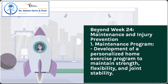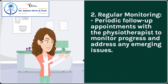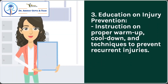Beyond Week 24 – Maintenance and Injury Prevention: 1. Maintenance program – development of a personalized home exercise program to maintain strength, flexibility, and joint stability. 2. Regular monitoring – periodic follow-up appointments with the physiotherapist to monitor progress and address any emerging issues. 3. Education on injury prevention – instruction on proper warm-up, cool-down, and techniques to prevent recurrent injuries.